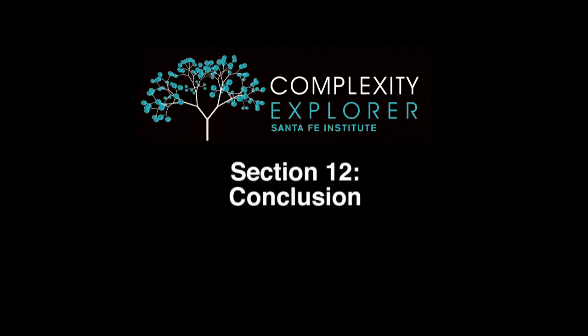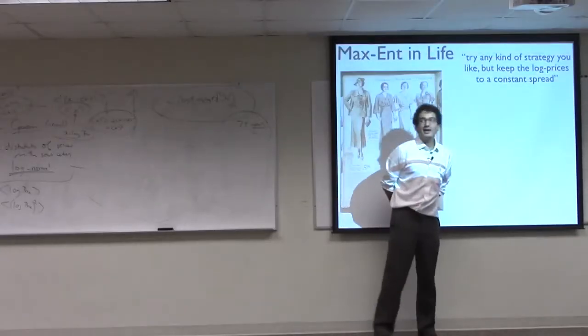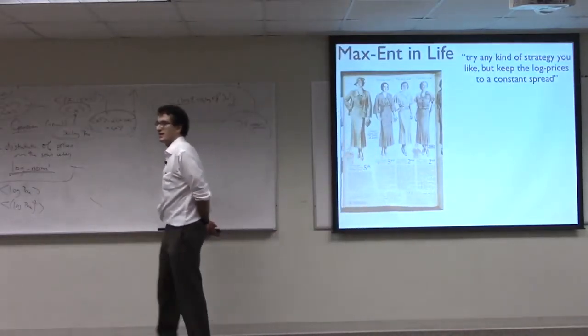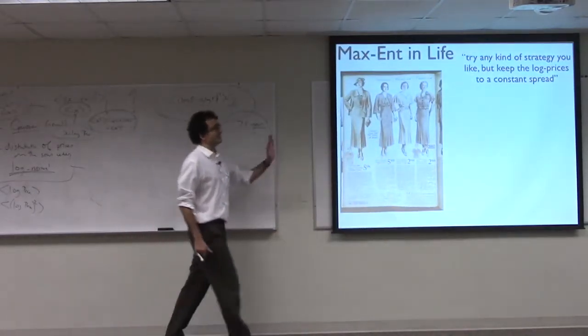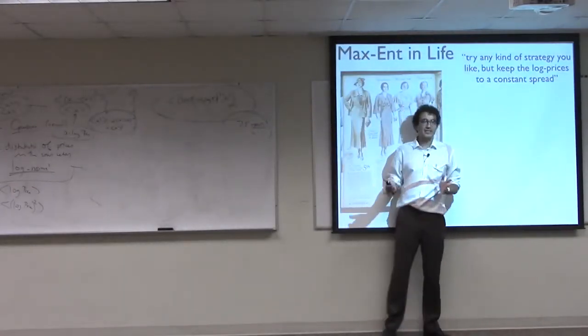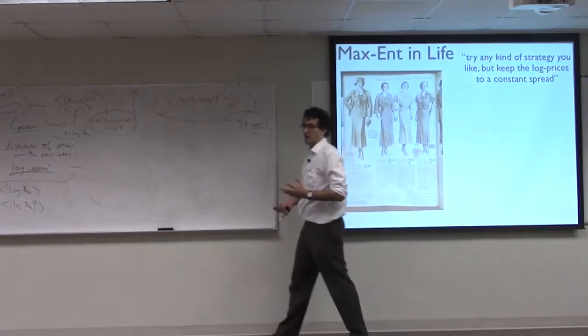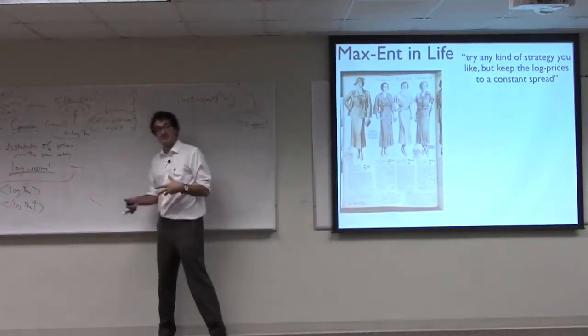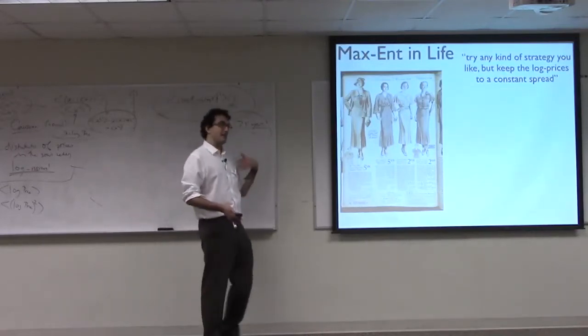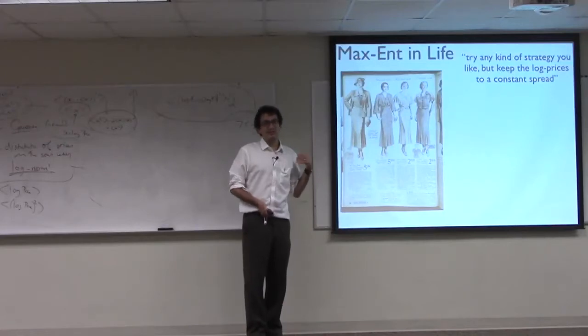So in particular, and I'm summarizing Montrell's argument here, what he says is the following: The way to explain this feature of the data is that the company as a whole has this goal of keeping the log prices to a constant spread. Now why keep log prices to a constant spread? Well there's potentially psychological explanations that say we tend to perceive things on a multiplicative or logarithmic scale. We perceive things as being twice as expensive or half as expensive, we don't perceive things as being $10 more or $10 less.